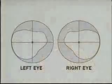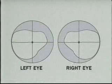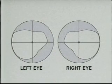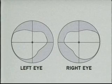Note that the eyebrows normally limit the visual fields in the upper temporal quadrants compared to the lower temporal quadrants and the directly lateral areas.